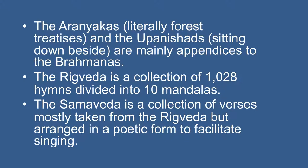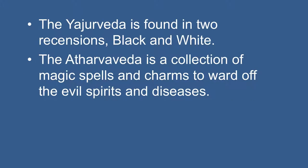The Aranyakas and the Upanishads are mainly appendices to Brahmanas. These are also known as Vedanta and contain philosophical discussion. The Rig Veda is a collection of 1028 hymns divided into 10 mandals. They are the earliest composition and hence depict the life of the early Vedic people in India. The Sam Veda is a collection of verses mostly taken from the Rig Veda but arranged in a poetic form to facilitate singing. The Yajur Veda is found in two recensions, black and white, and is full of rituals to be performed publicly or individually. The Artha Veda is a collection of magic spells and charms to ward off evil spirits and diseases.